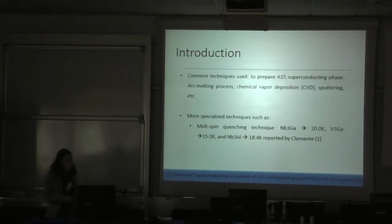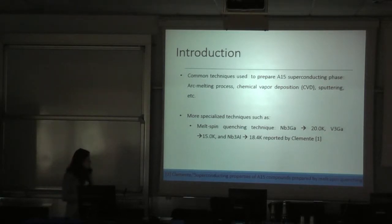The common technique used to prepare A15 superconducting phase that everybody knows are melting process, chemical vapor deposition, sputtering, etc. There are also more specialized techniques such as arc melting, spin quenching, where Clemente reports for niobium-3-gallium 20 kelvins, for vanadium-3-gallium 15 kelvins, and for niobium-3-gallium-aluminum 18.4 kelvins.